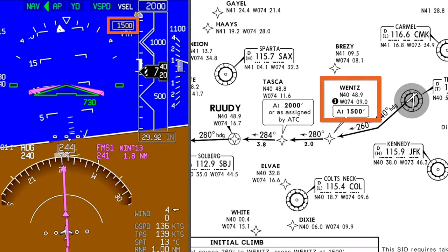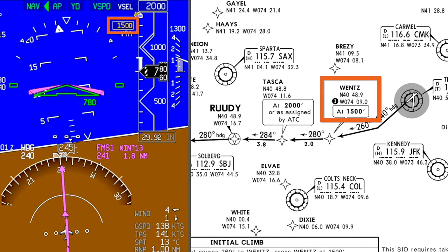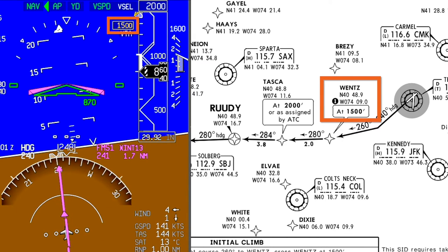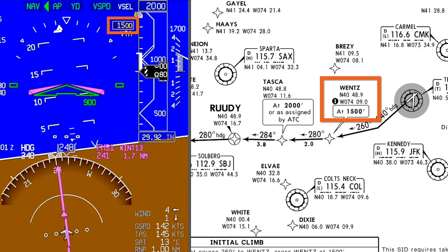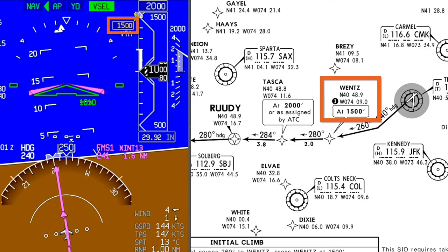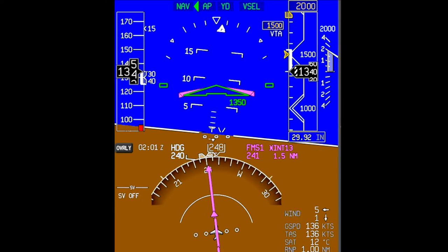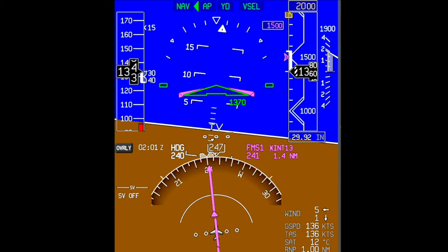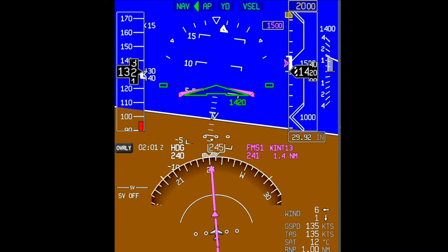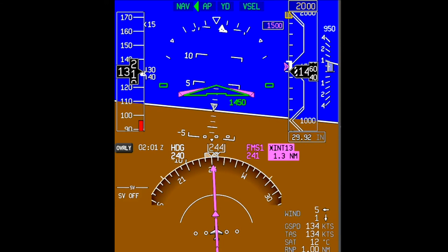In this case, Wentz is the next waypoint with an altitude constraint of 1500 feet. This can and should be cross-checked on the chart. With VNAV armed during a climb, the aircraft will capture the lowest of either the FMS altitude target or the altitude preselector.